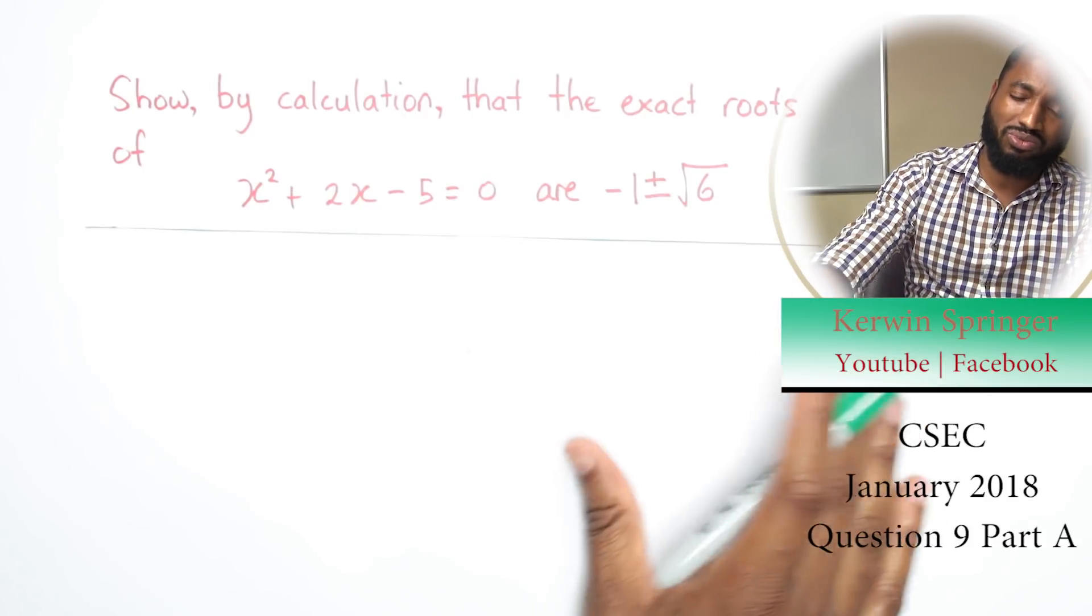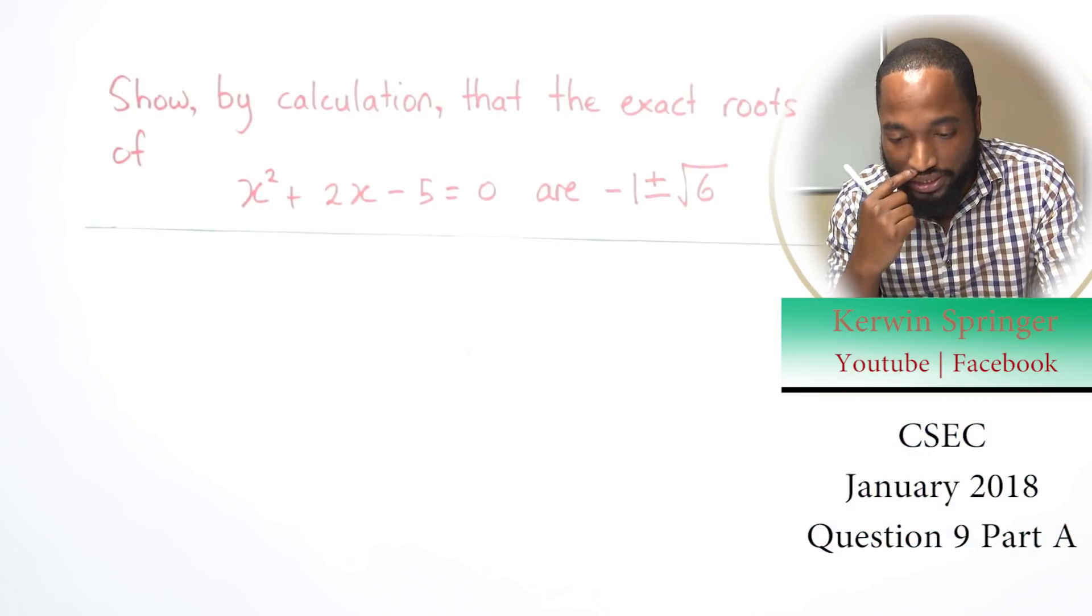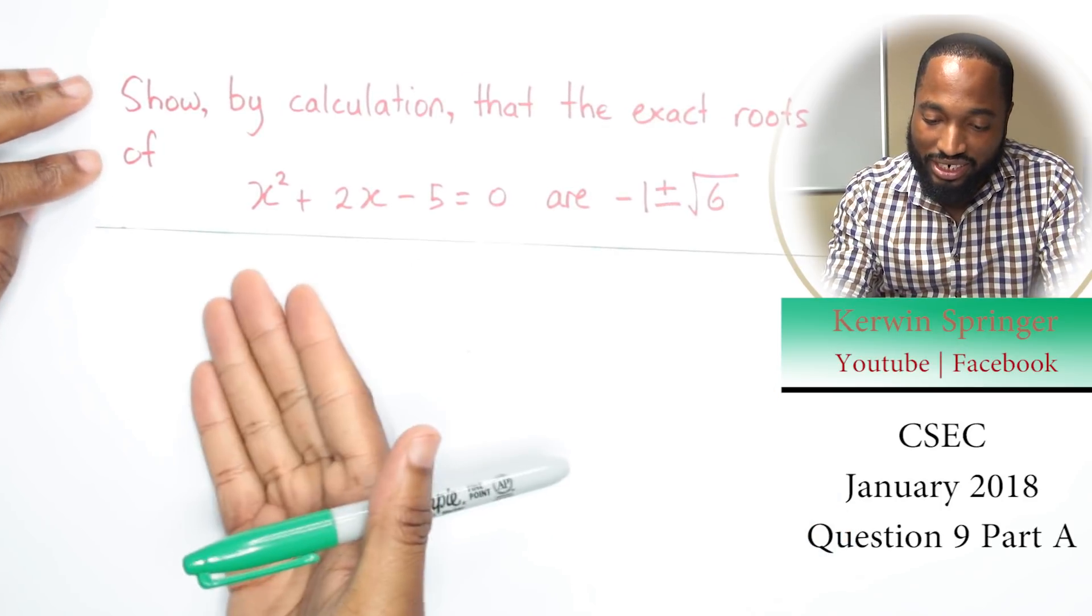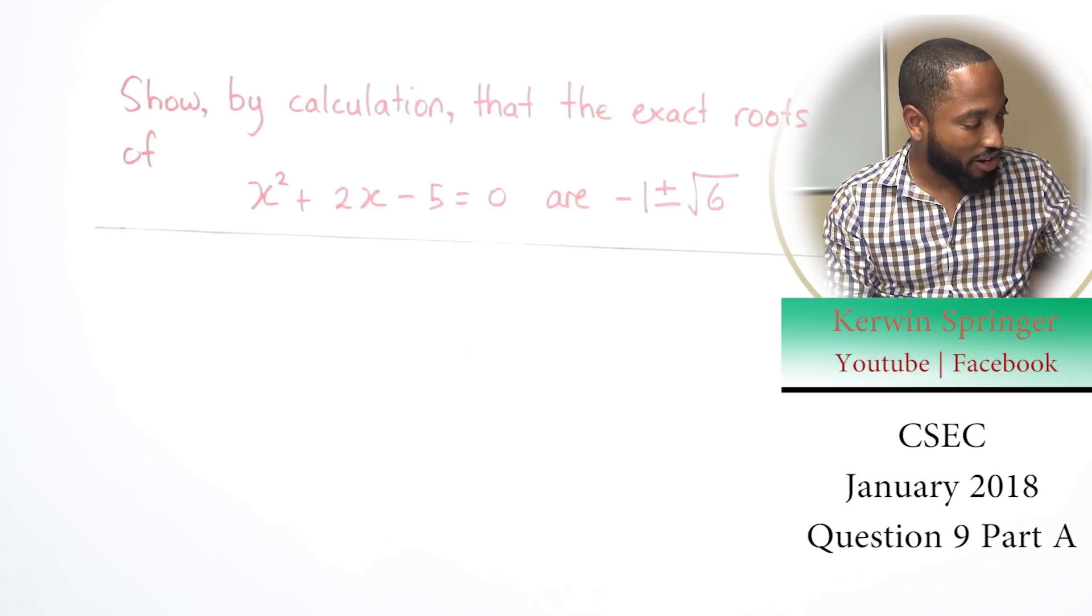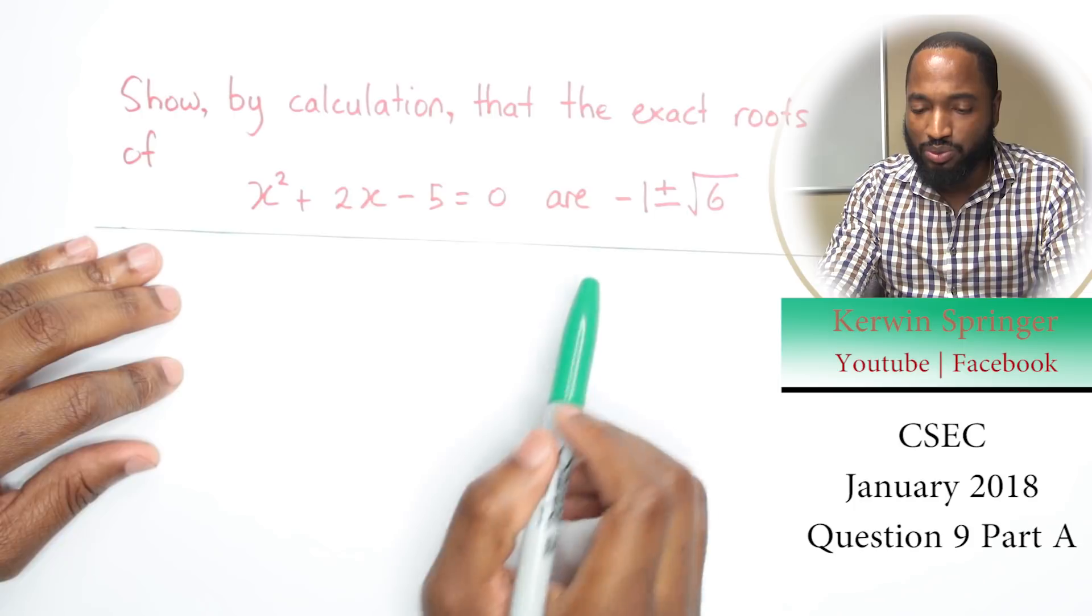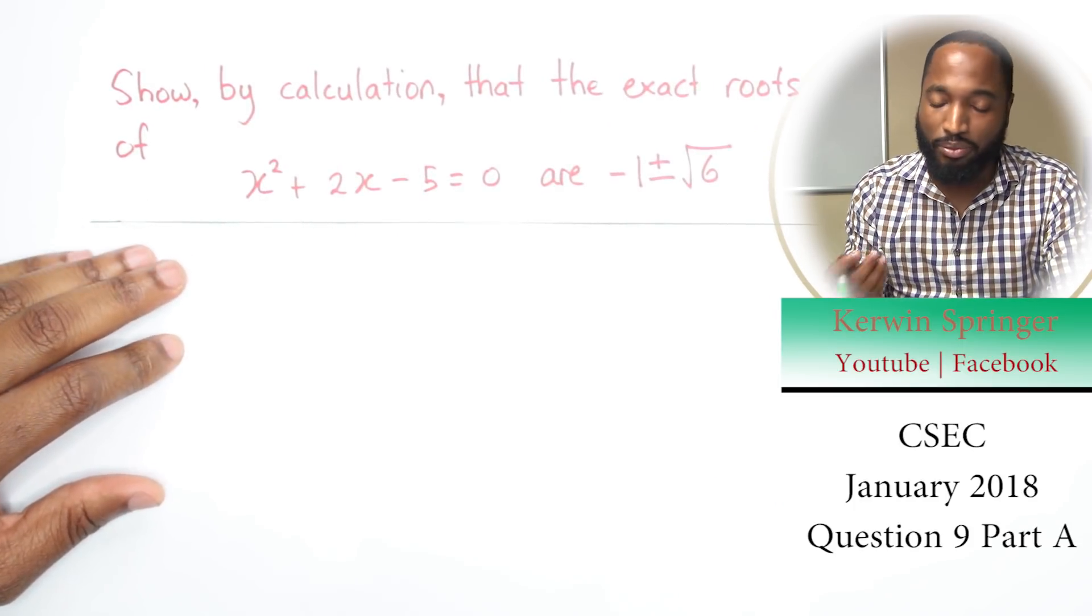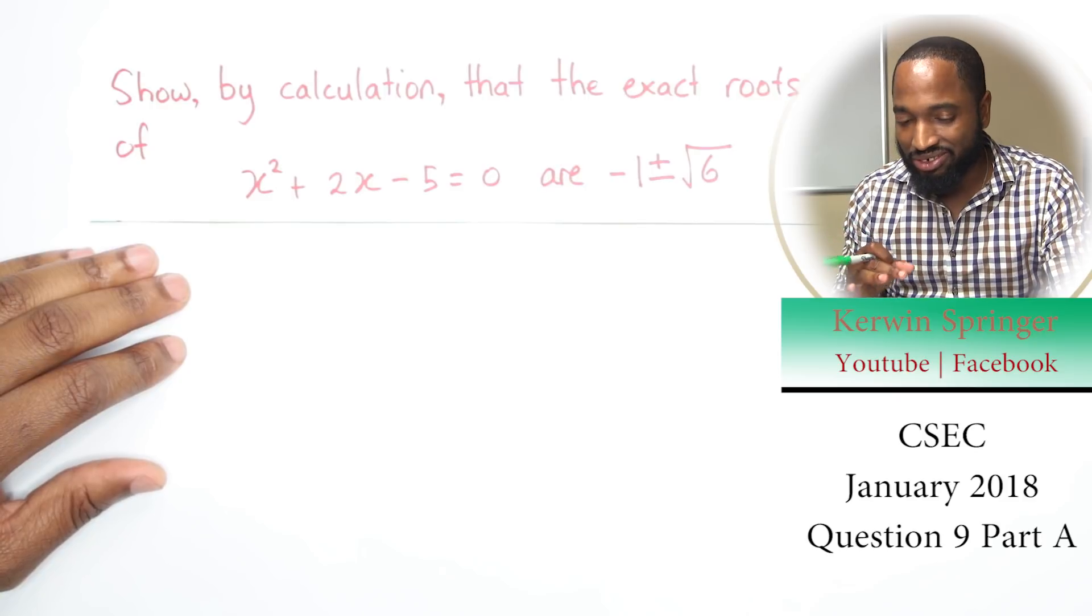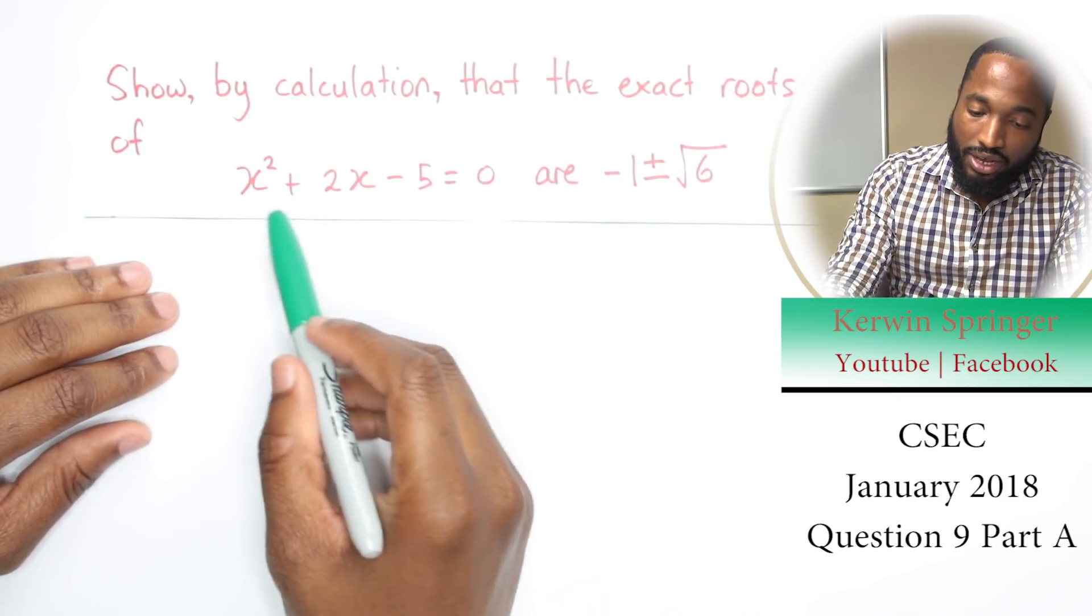Question 9 is traditionally completing the square, 70% of the time we are completing the square. This is no different, they just didn't ask it to put it in the form like that. This question involves completing the square. You can actually use the formula as well, but I feel you may be risking some marks because they said show by calculation and the formula kind of ducking some calculation. You just plug and play the quadratic formula. Let me seek it out.